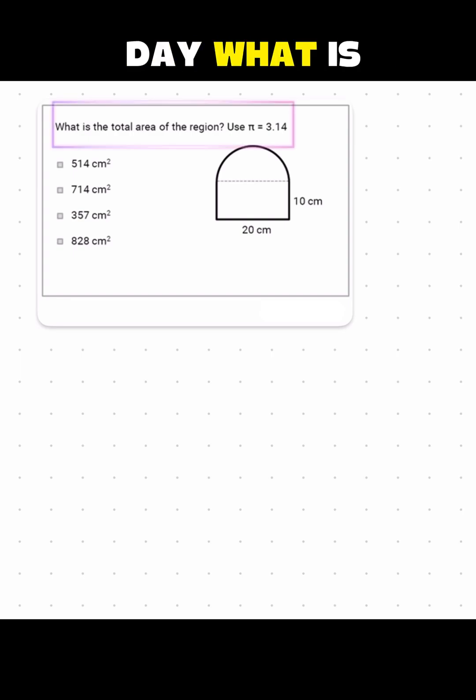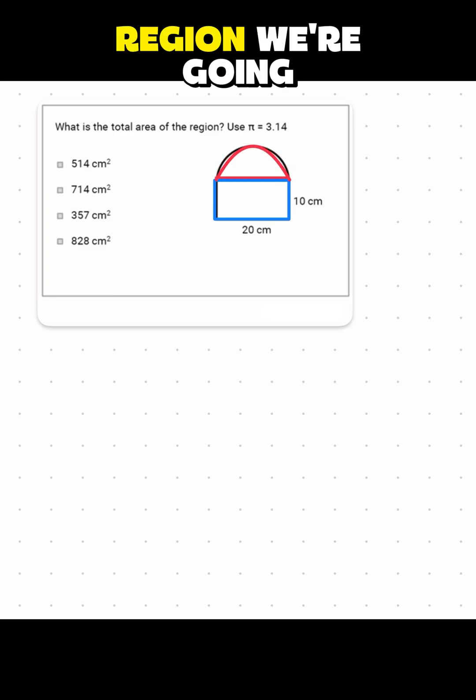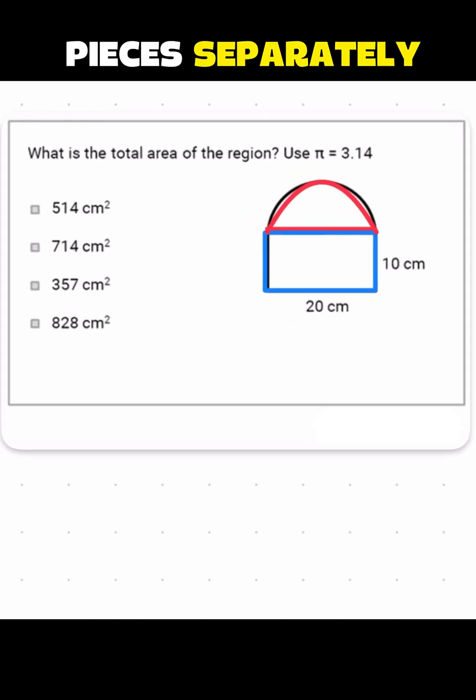Today's GED math problem of the day: what is the total area of the region? Use pi equals 3.14. So it looks like we have a rectangle and a semicircle, which is half of a circle. In order to find the area of this region, we're going to have to take the two pieces separately.